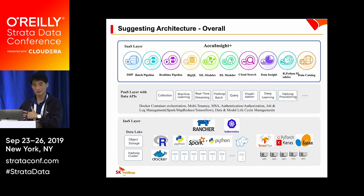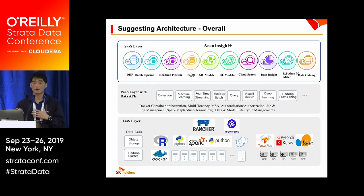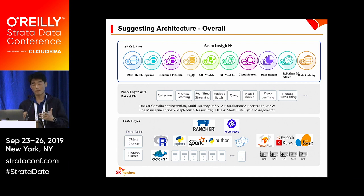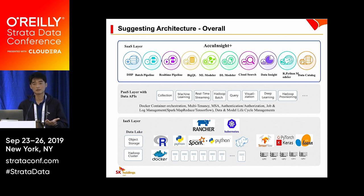The platform layer modules include quality, visualization, and deep learning. Each module has about 20 to 30 APIs. When we deliver our platform on-premise, we combine only the necessary modules according to user requirements, because of the microservice architecture. This layer provides very important functions such as Docker container orchestration with multi-tenancy, microservice architecture, authentication and authorization, Java and log management, and data and model lifecycle management.